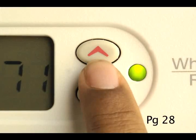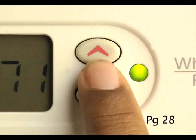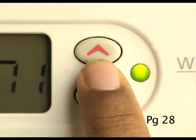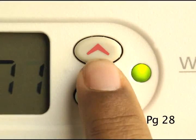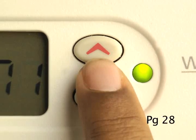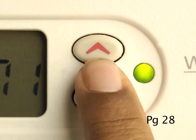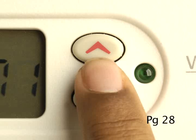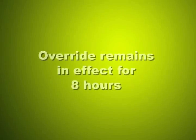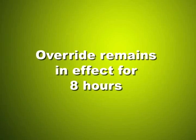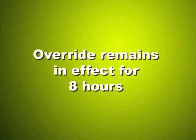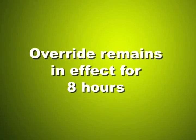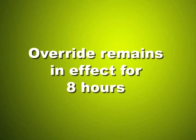Finally, you can override a critical event. Press the up or down arrow button to override a critical event. The green light on the thermostat turns off when you override a critical event. It is important to remember that when you override a critical event, the override remains in effect for eight hours. You cannot cancel an override of a critical event.